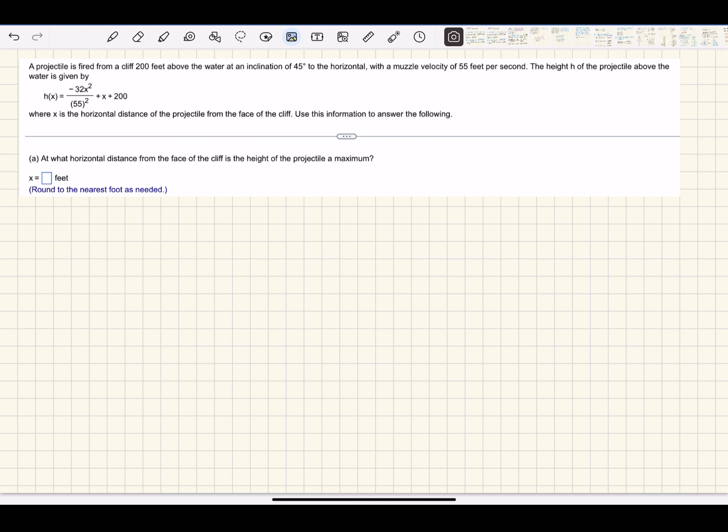A projectile is fired from a cliff 200 feet above the water at an inclination of 45 degrees to the horizontal with a muzzle velocity of 55 feet per second. The height h of the projectile above the water is given by h(x) = -32x²/(55²) + x + 200, where x is the horizontal distance of the projectile from the face of the cliff. Our two variables are x, the horizontal distance, and h, the height above the water.